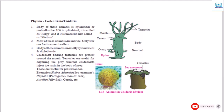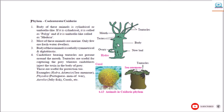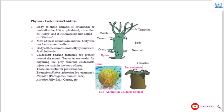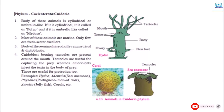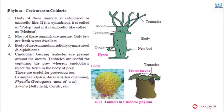Some animals have an umbrella-like structure, and this is called medusa. Most of these animals are marine. Only few are freshwater dwellers. The body of this animal is radially symmetrical and diploblastic — these two criteria were already studied in the previous video. Nematoblasts bearing tentacles are present around the mouth. Tentacles are useful for capturing prey, whereas nematoblasts inject toxin into the body of prey. Those are also useful for protection.